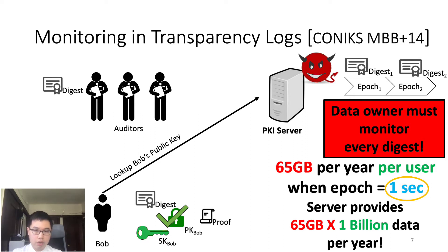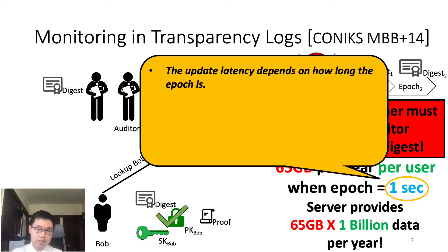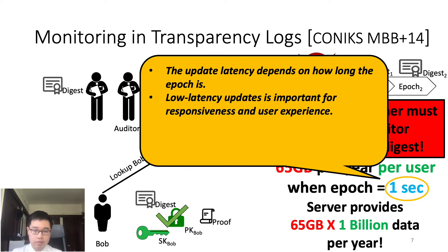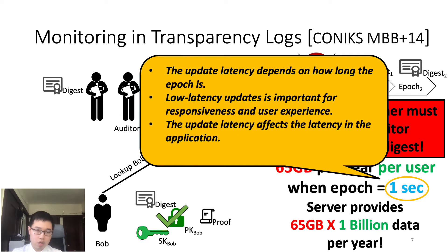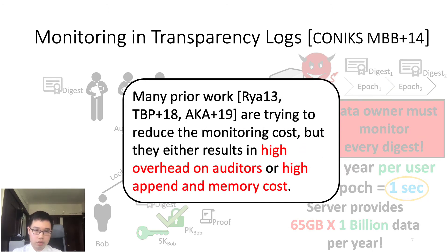To reduce monitoring costs, prior systems usually assume the epoch interval to be long, such as one hour or one day. However, this epoch interval affects the update latency of transparency logs, because the server's new state will not be visible to users unless it publishes a new digest. Low-latency updates are very important for responsiveness and user experience. For example, users may not want to wait an hour or a day to revoke their compromised public key. Also, this update latency affects the actual latency in applications such as IoT systems. How to reduce monitoring costs remains a challenging problem in the literature — many prior works try to reduce monitoring costs but either result in high overhead for auditors or high append and memory costs.